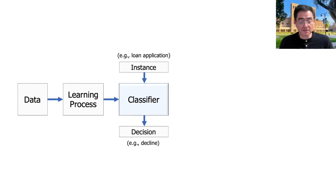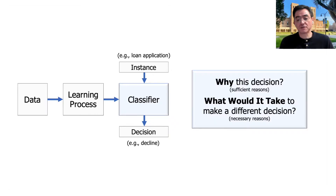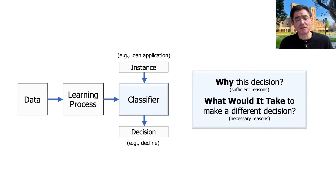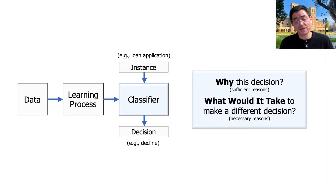We have an instance — let's say a loan application — and the application gets declined, and we're interested in two kinds of questions. The first one is: why did you make that decision, why did you decline this applicant? And the second question is: what would it take to change the decision, to get this applicant to be granted a loan?